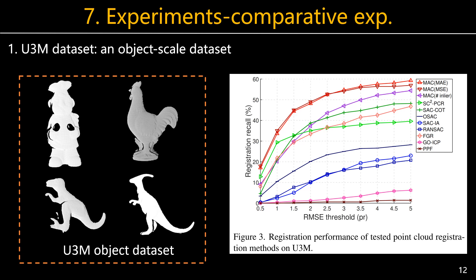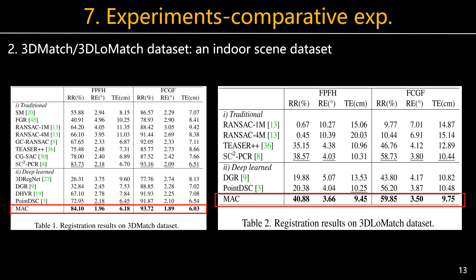We report experimental results. The first dataset is an object-scale dataset called 3DMatch. On this dataset, MAC significantly outperforms our competitors. Note that object-scale datasets have always been overlooked in recent registration papers. Then on the indoor scene datasets 3DMatch and 3DLoMatch, we can see that MAC achieves the best registration recall and precision results. Moreover, MAC is significantly better than learned methods such as PREDATOR.